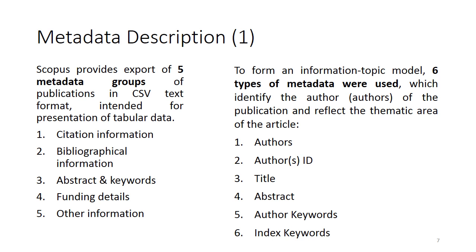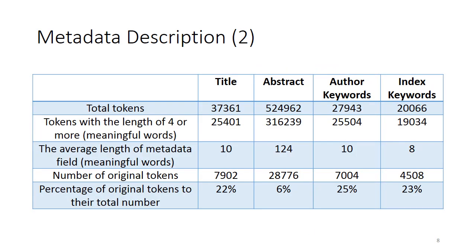For our model we used six types of data which identify the author or authors of the publication and reflect the thematic areas of the article: authors, author ID, title, abstract, author keywords, and index keywords. On this slide you can see general information about this metadata, such as total number of tokens, tokens with a length of four or more, the average length of metadata fields, number of original tokens, and the percentage of original tokens to the total number.